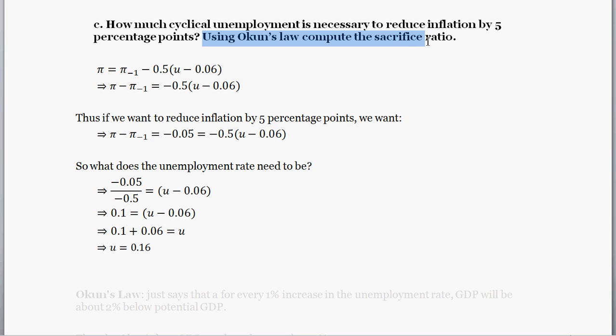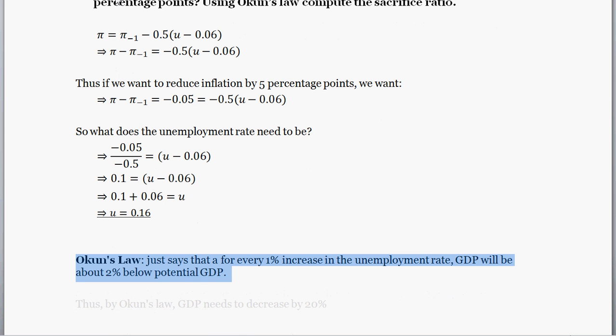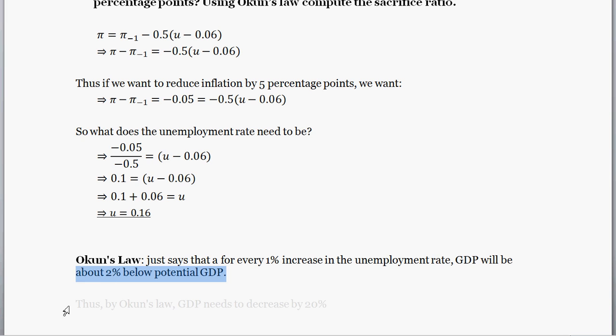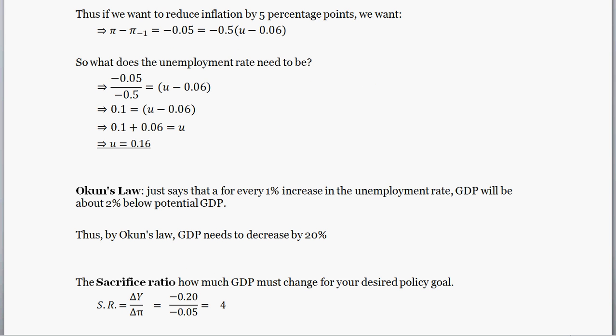The second part of Part C asks us to use Okun's Law to compute the sacrifice ratio. Okun's Law says that for every 1% increase in the unemployment rate, GDP will be about 2% below potential GDP. So in order to get a 1% decrease in inflation, our Phillips curve and Okun's Law together tell us that GDP will need to drop by 5 percentage points. That's a pretty big sacrifice ratio, but it follows from our simple model.